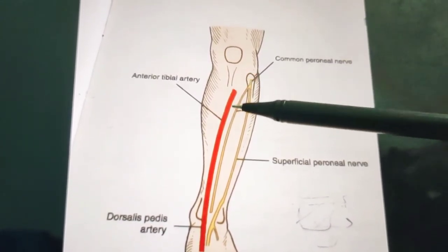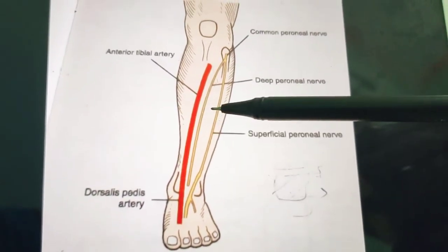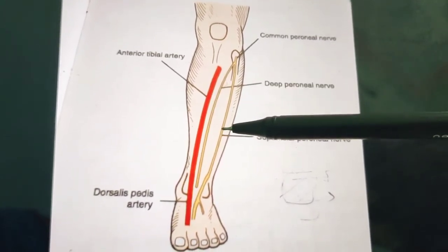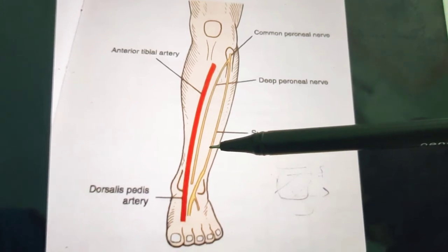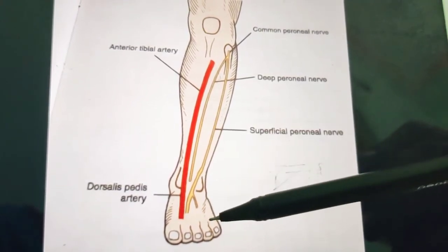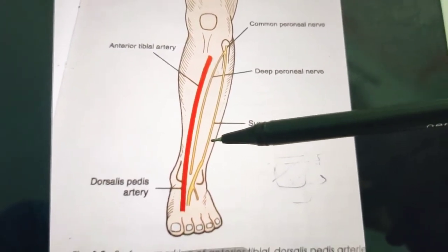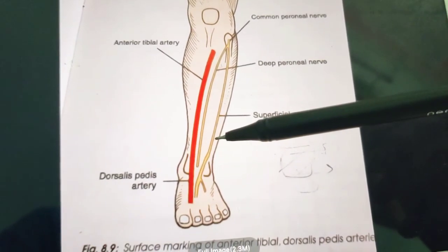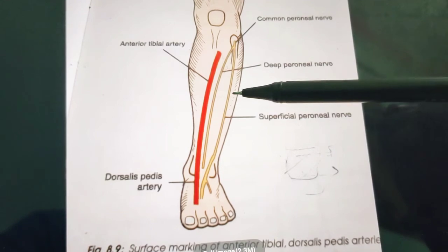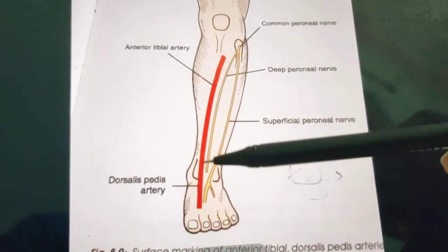Extensor digitorum longus belongs to the anterior compartment and goes to the digits. As the nerve moves further it comes towards the anterior side — first it is between peroneus longus, then between peroneus longus and peroneus brevis in the lateral compartment, and then it reaches the anterior border of peroneus brevis and descends in the groove between peroneus brevis and extensor digitorum longus, especially under the cover of deep fascia.